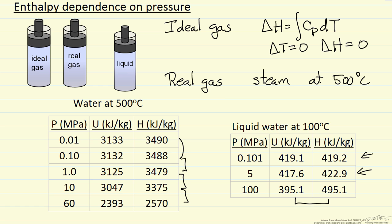So for an ideal gas, enthalpy was independent of pressure because the molecules don't interact. Clearly in the liquid the molecules interact, but they're densely packed so we can't change the properties very much except by going to very high pressure.